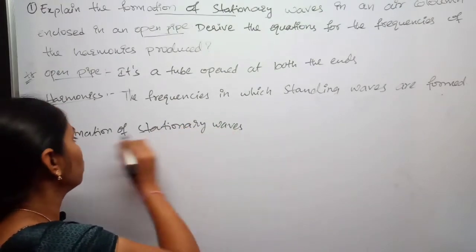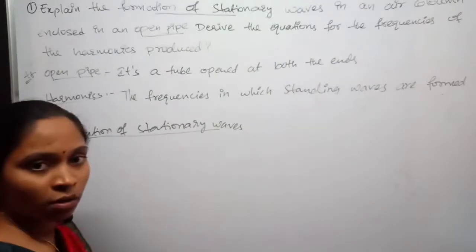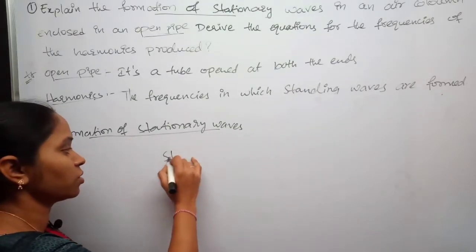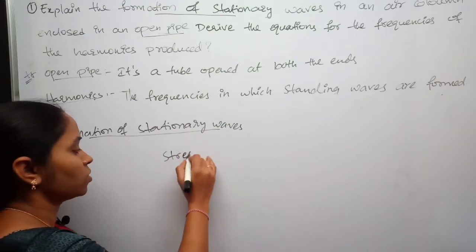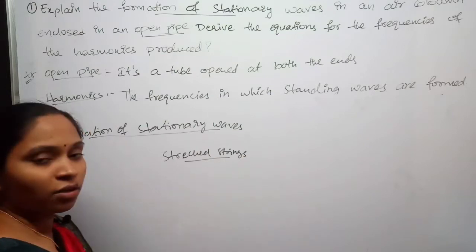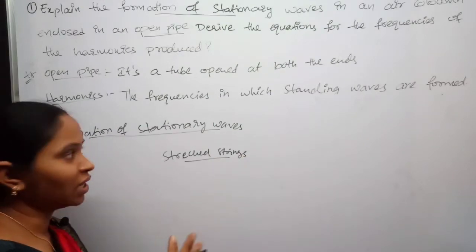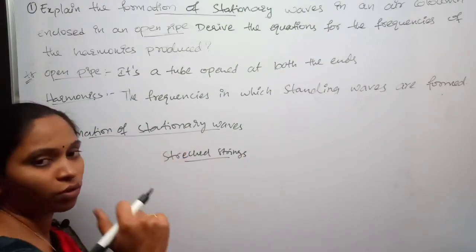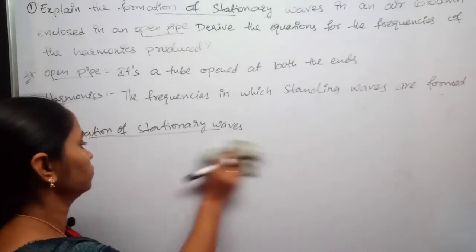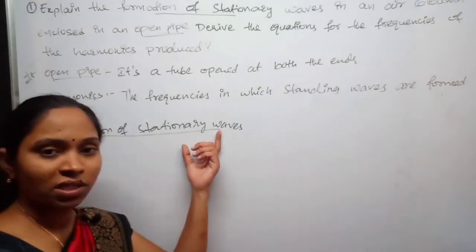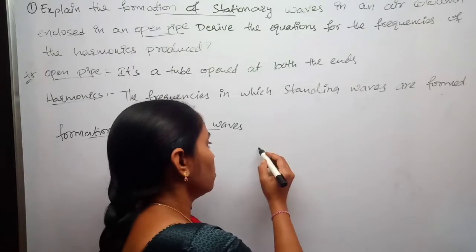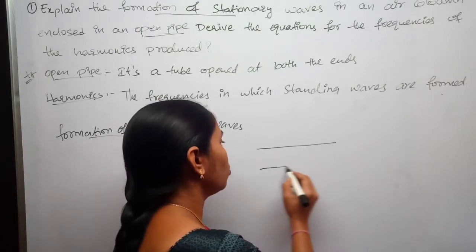You should go through our previous lecture on the formation of stationary waves in stretched strings. If you go through that lecture, you will be able to easily understand the formation of stationary waves in open pipes. So how are stationary or standing waves formed? Let's see — I am considering an open pipe in which air is enclosed.